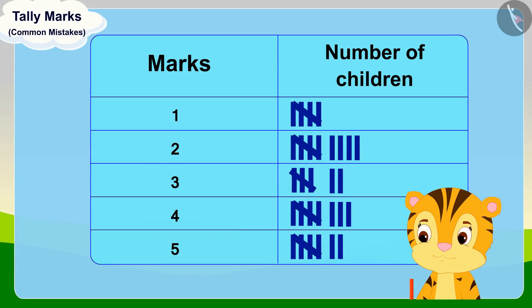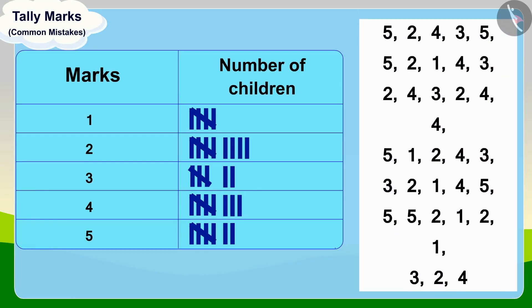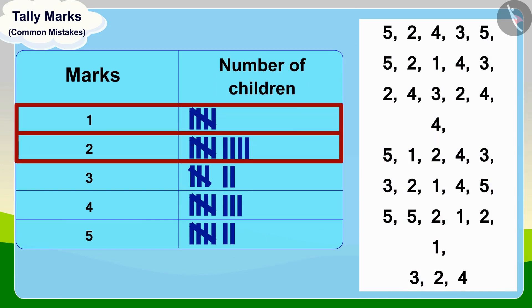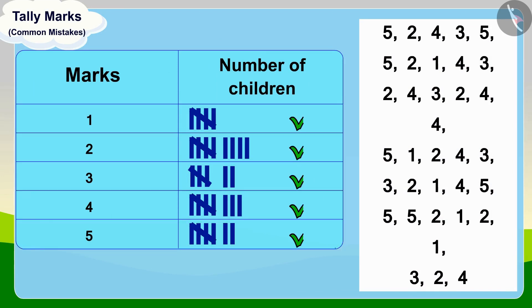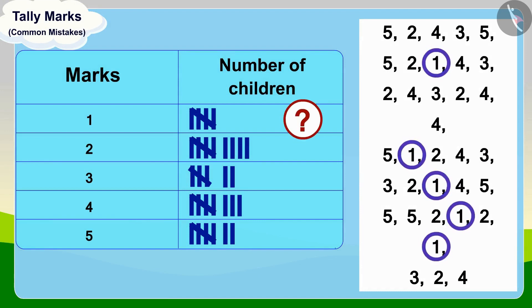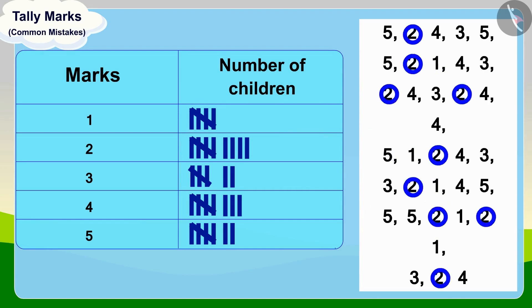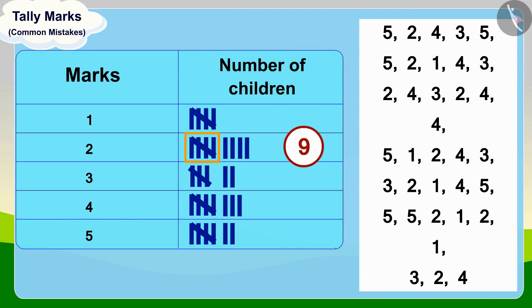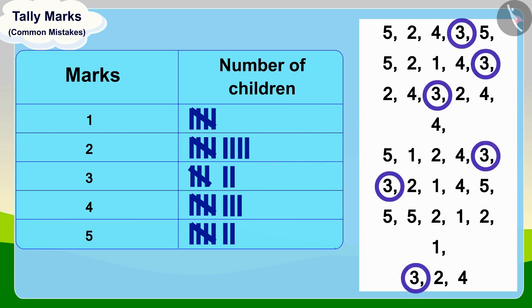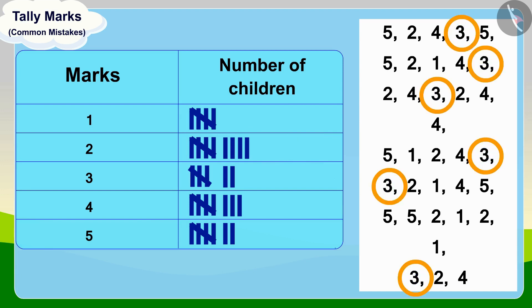Then she thought of a solution to this problem — why not check the tally marks of each score once again? Children, can you find out how many tally marks should be there for one mark? That's correct, one group of tally marks. And for two marks? One group of tally marks and four lines.